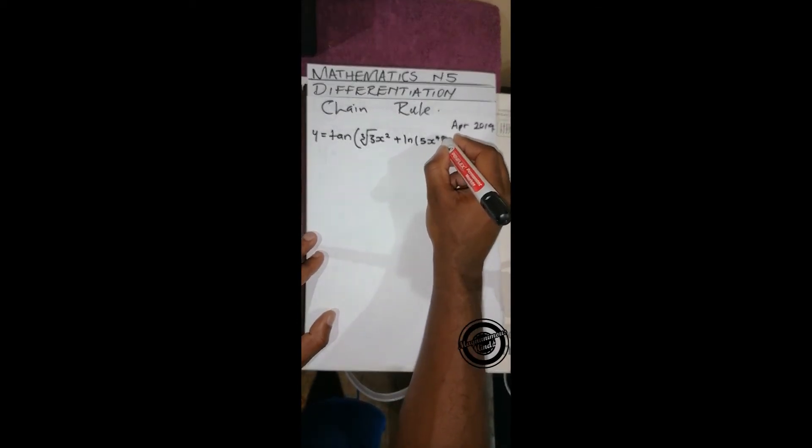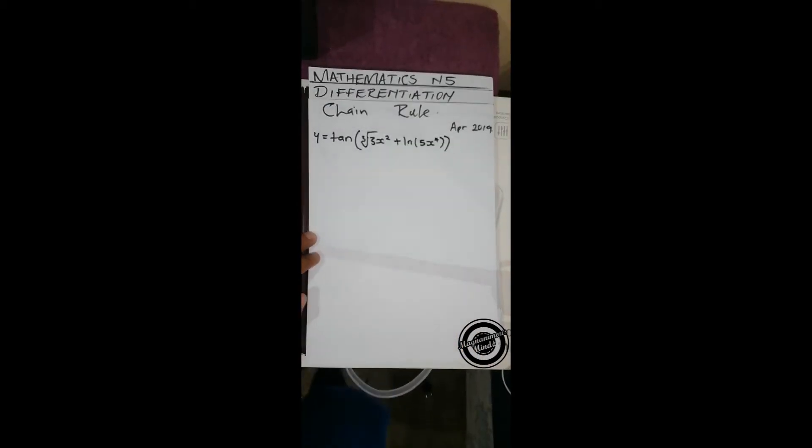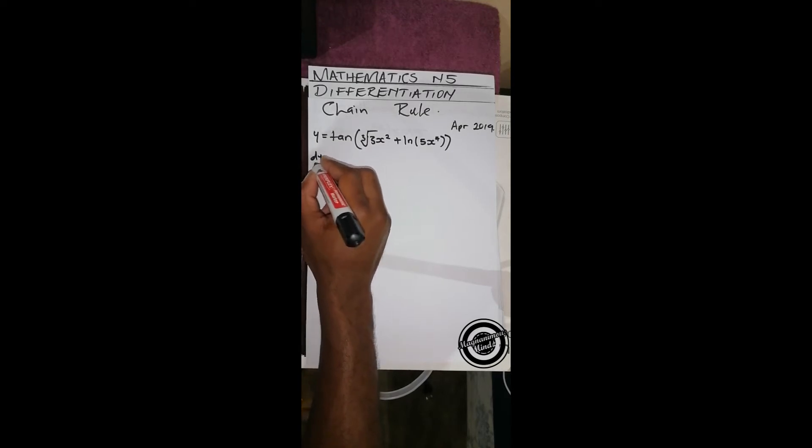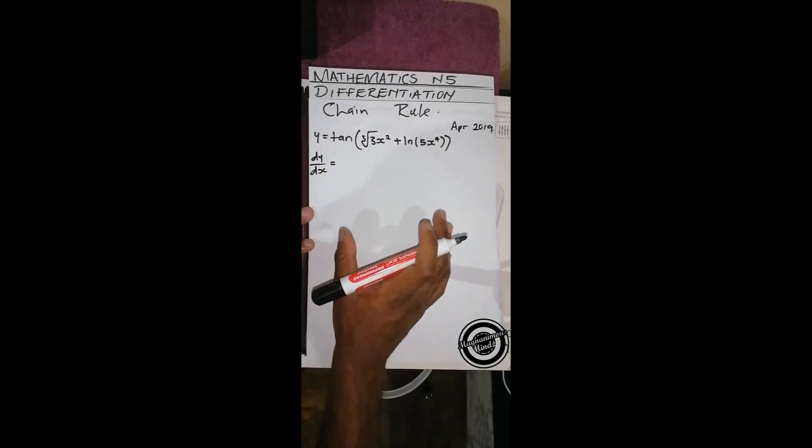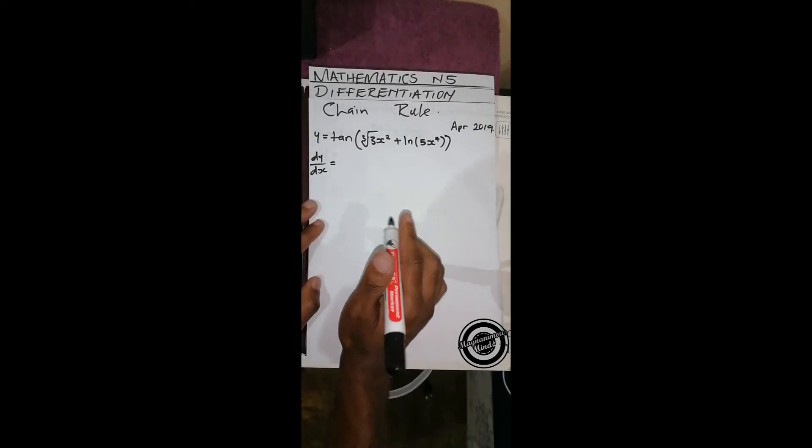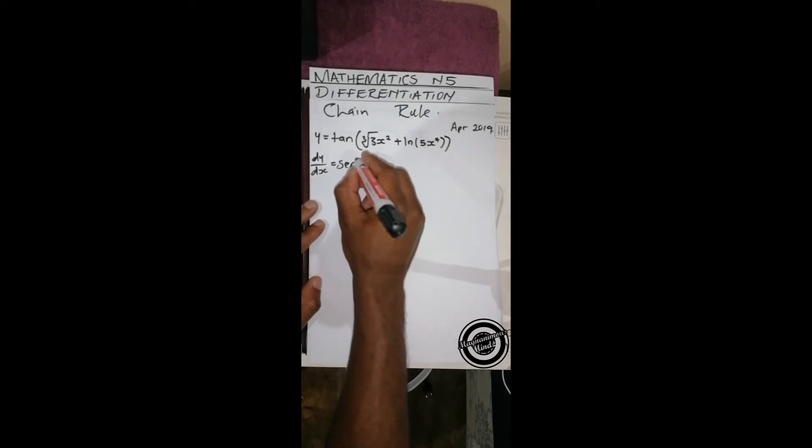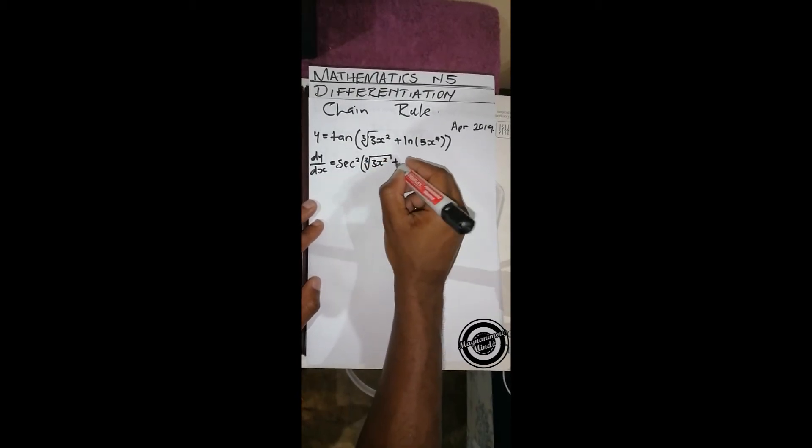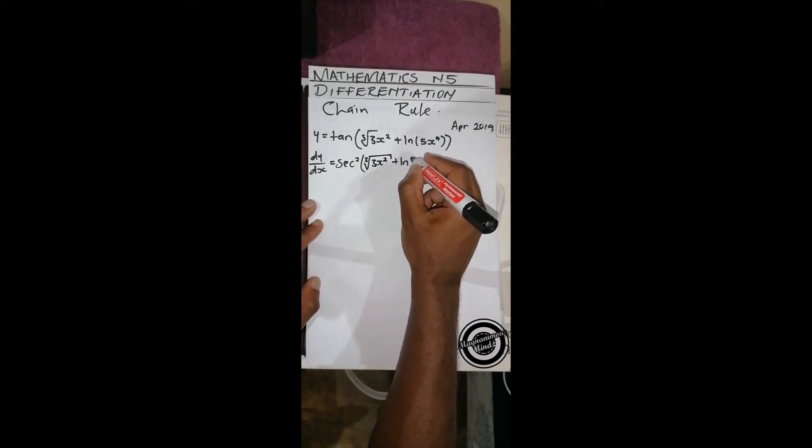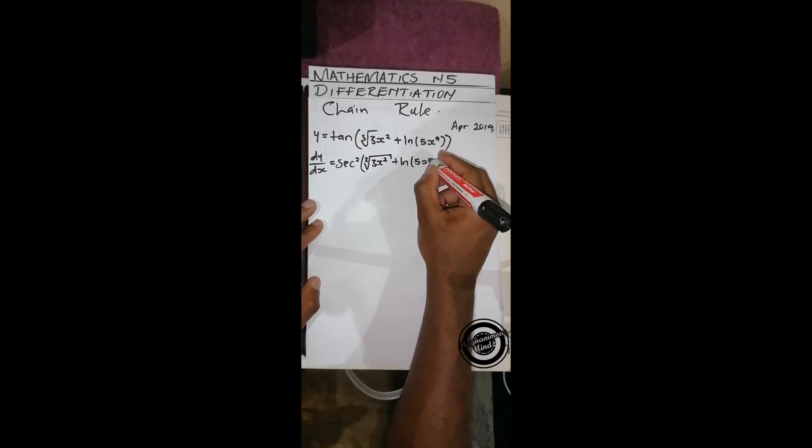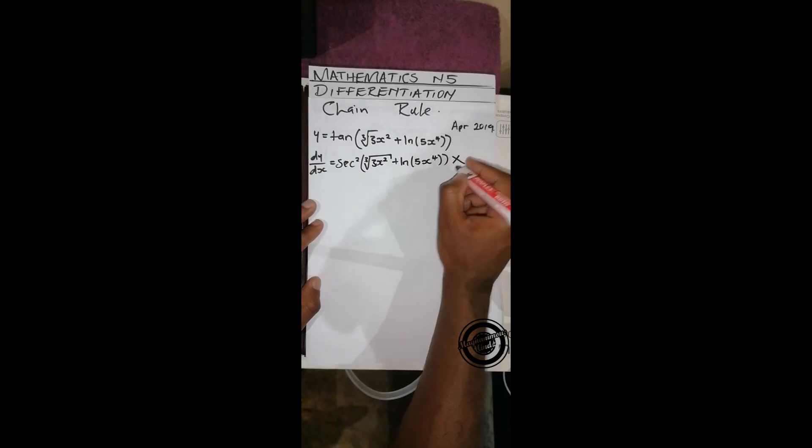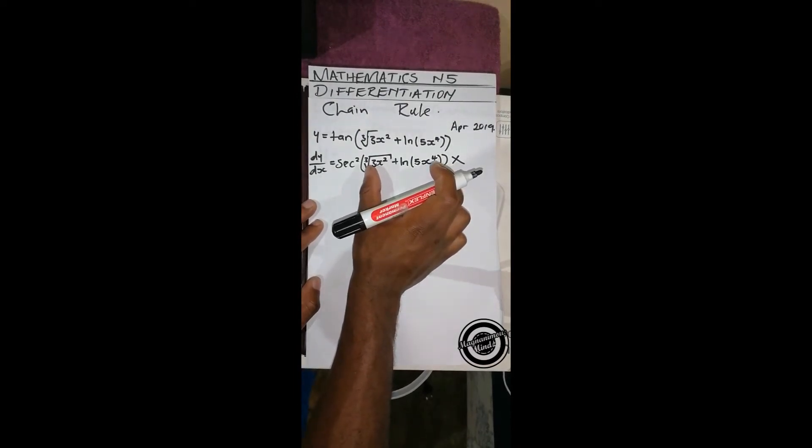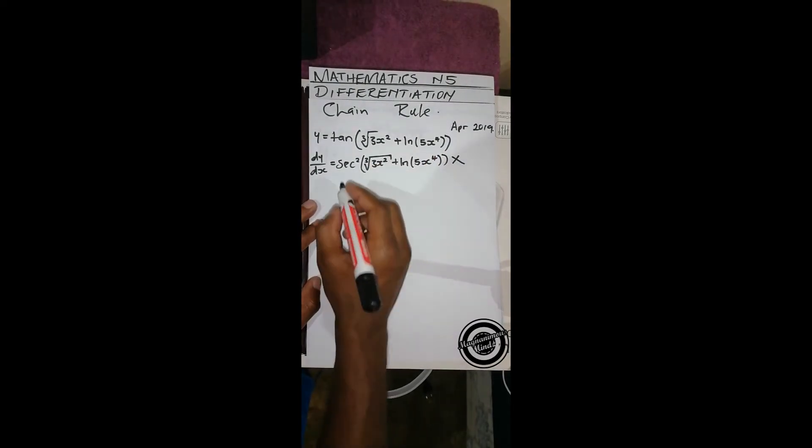To do this, we first write dy/dx equals... We first differentiate the outer function which is tan. If we do that, we'll get sec squared of cube root of 3x squared plus ln of 5x to the power 4, times - since I can't fit here I'll write it down - the derivative of the inside function, which is going to be...